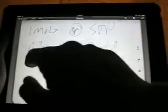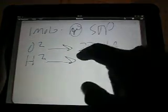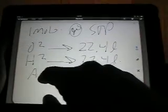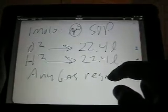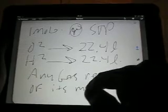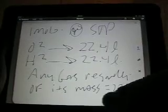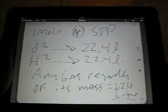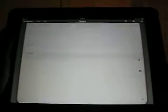Any gas, any gas, it doesn't matter what. So one mole at standard temperature and pressure, so one mole of molecular oxygen is 22.4 liters. One mole of molecular hydrogen, these are all in their gas phase again, is going to be 22.4 liters. So one mole of any gas, any gas regardless of its mass is going to equal 22.4 liters.